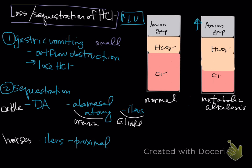How are you going to diagnose this? The quickest way, especially with primary gastric vomiting or a DA, is to look for an increase in bicarb and a decrease in chloride — that's the easiest way to identify this. You can also have more subtle changes where chloride is less than sodium, which we can see in animals that might have occasional gastric vomiting but not a primary disease.